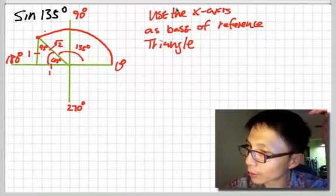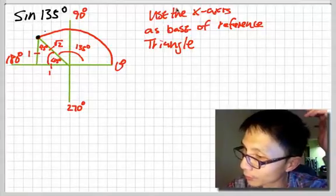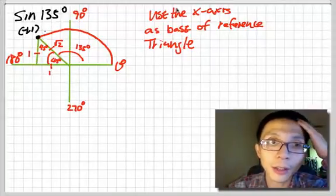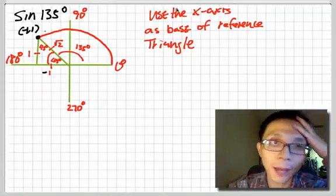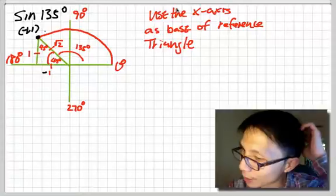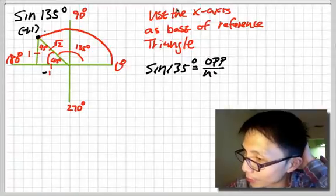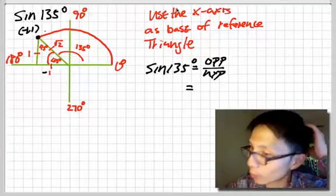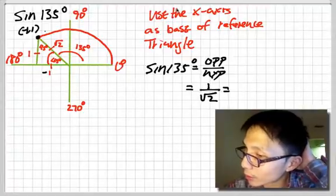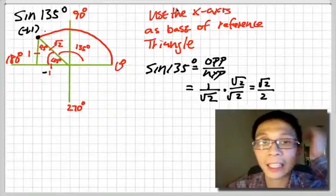We'll find the coordinate of this point. The coordinate is actually negative 1 and 1. Why is it negative 1? Because here the distance is 1. The hypotenuse is always positive. So we want to find sine of 135, that's equal to opposite over hypotenuse. The opposite is 1 over the hypotenuse square root of 2, and that equals square root of 2 over 2, and it's going to be positive.